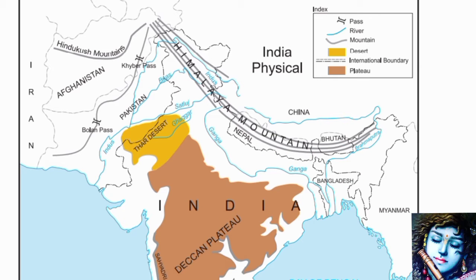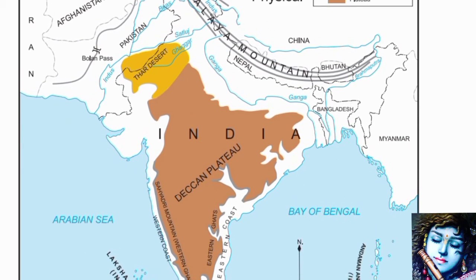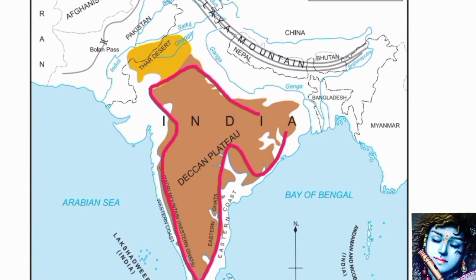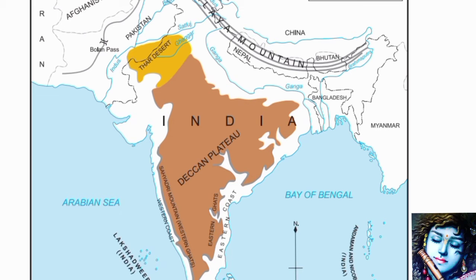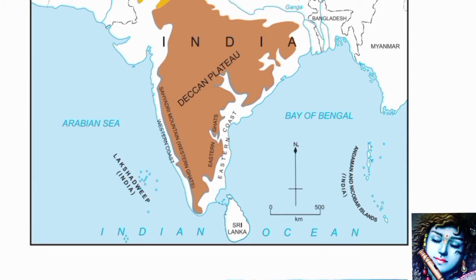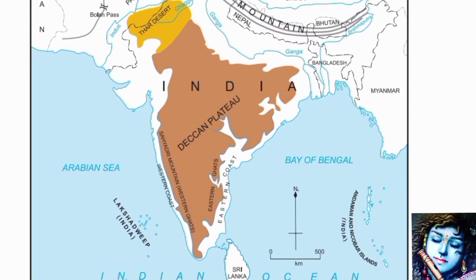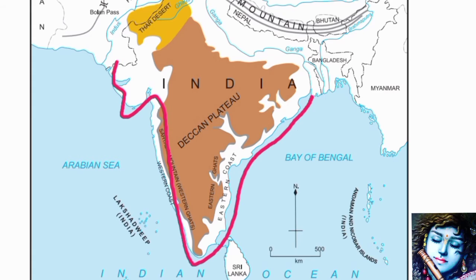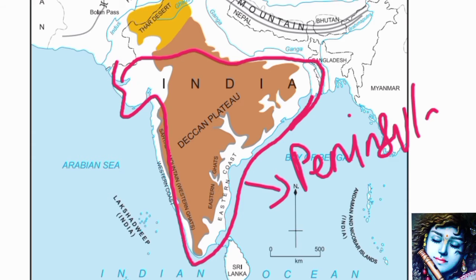Then we will see the Deccan Plateau, which is shown in the dark brown region on the map. Then there is the Thar Desert, shown in light brown. Then there are the island groups — Andaman and Nicobar in the Bay of Bengal, and Lakshadweep in the Arabian Sea. The lower region of India forms the peninsula.